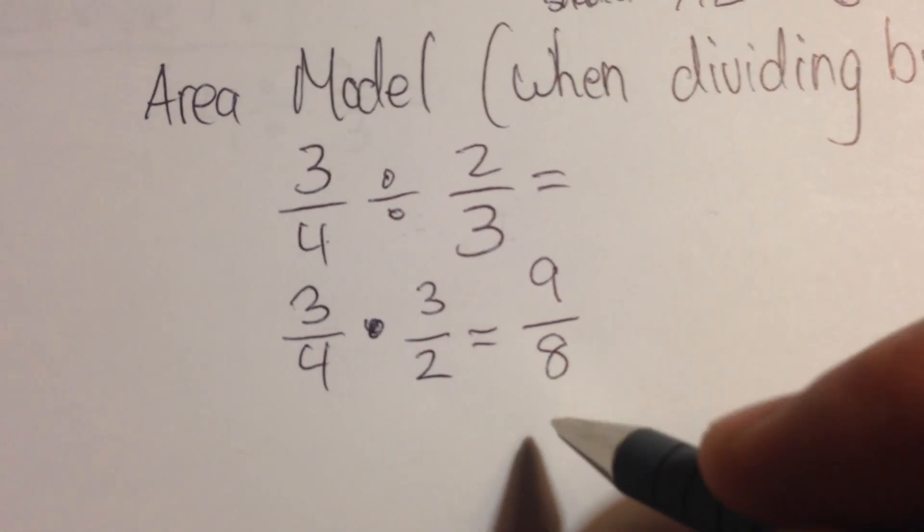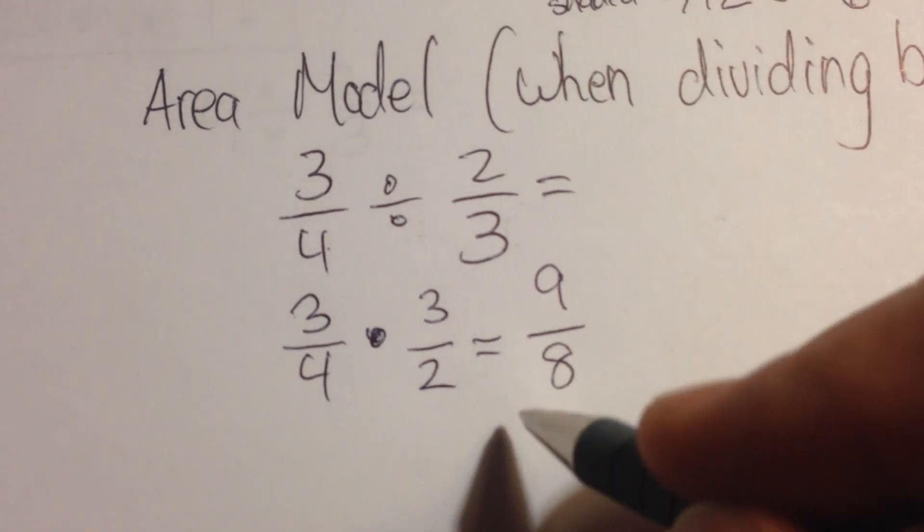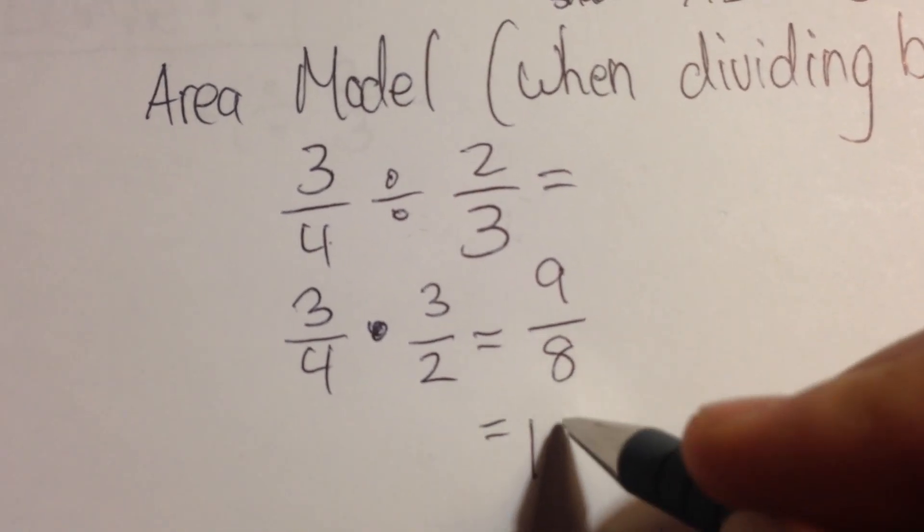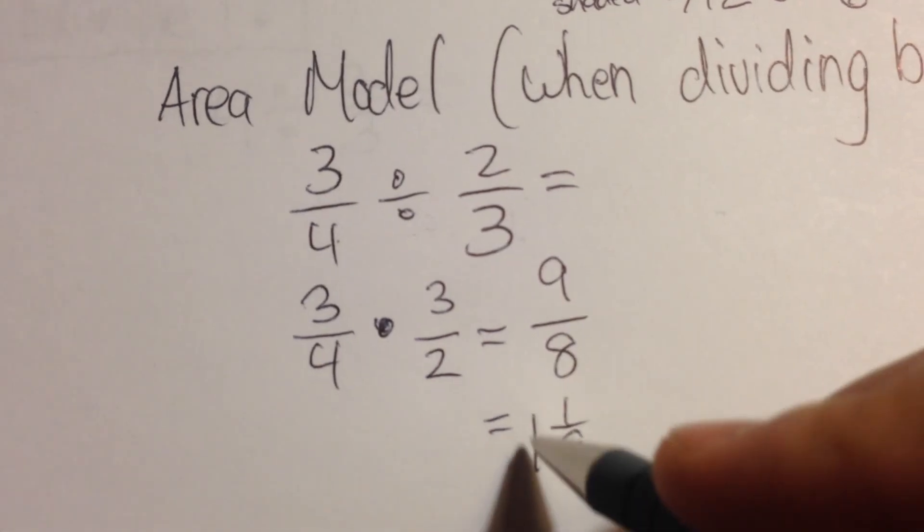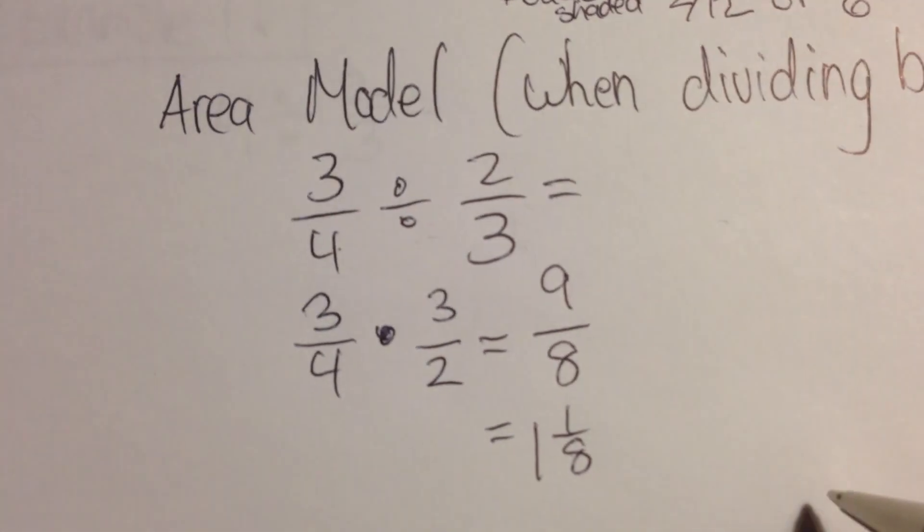Which will give me, if I put this in simplest form, 1 and 1 eighth. Because 9 divided by 8 is one whole amount, one group of 8, and I have one left.